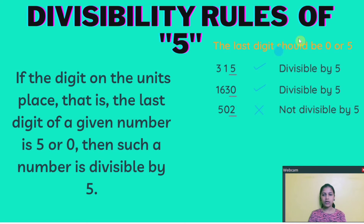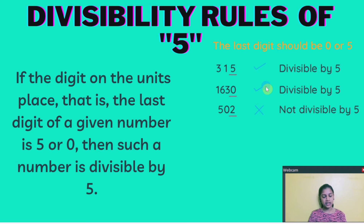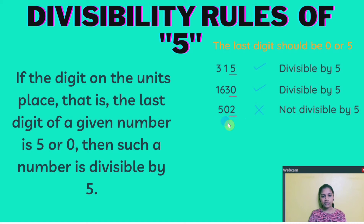Divisibility rules of 5. If the digit on the units place, that is the last digit of a given number, is 5 or 0, then such a number is divisible by 5. Example: 315 is divisible by 5 because the last digit is 5. But if you take 502, 2 is not divisible by 5, and the last digit is not 0 or 5, so it is not divisible by 5.